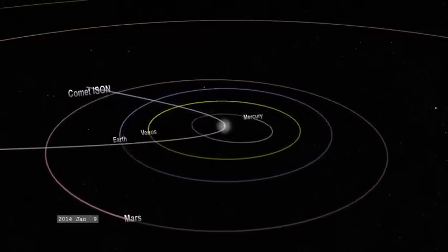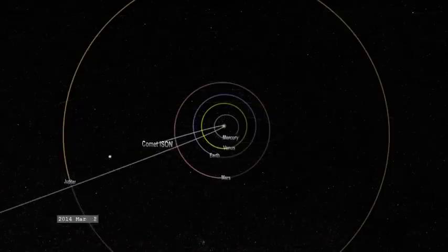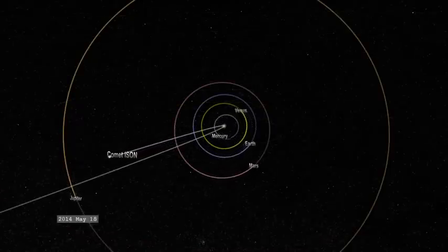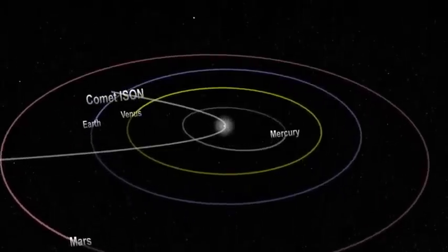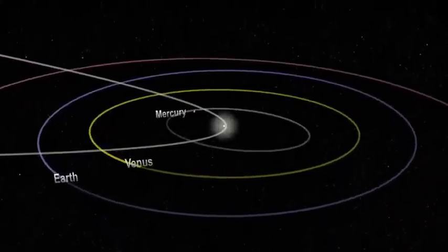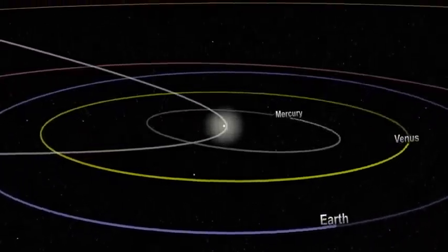In fact, ISON's orbit suggests that it may gain enough momentum to escape the solar system entirely and never return. Before it does so, it will pass within about 40 million miles from Earth on December 26, assuming it survives its trip around the Sun.